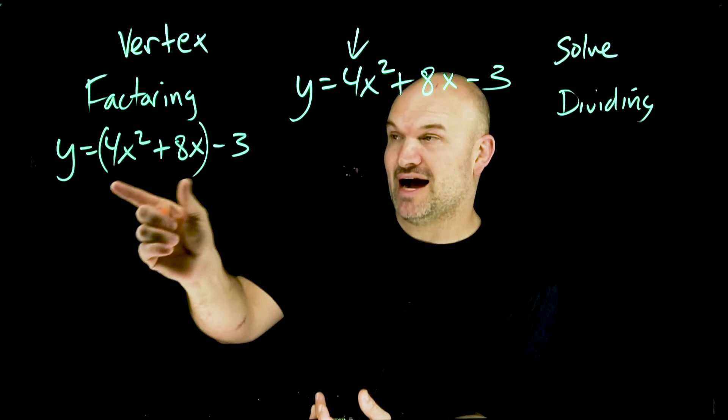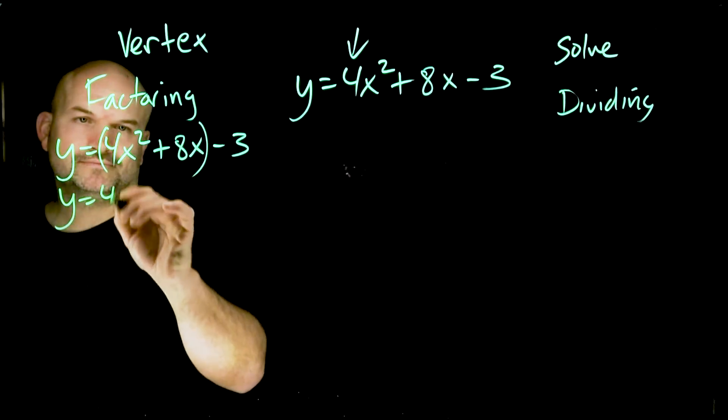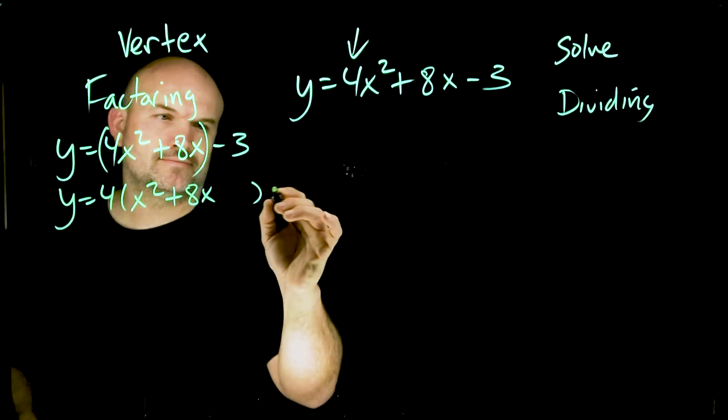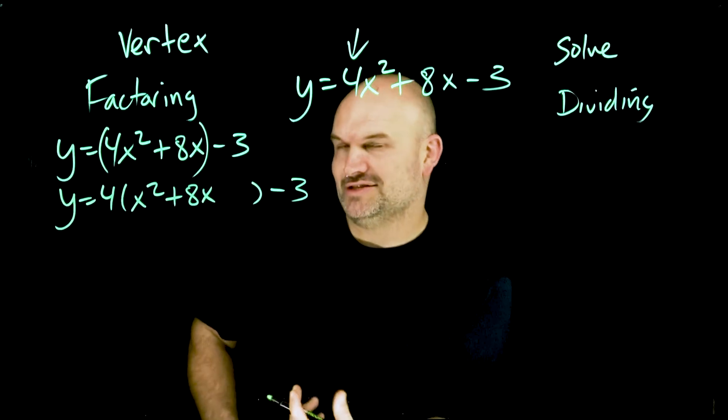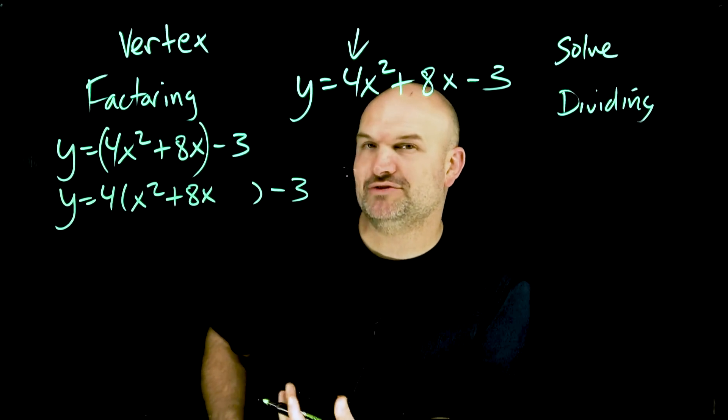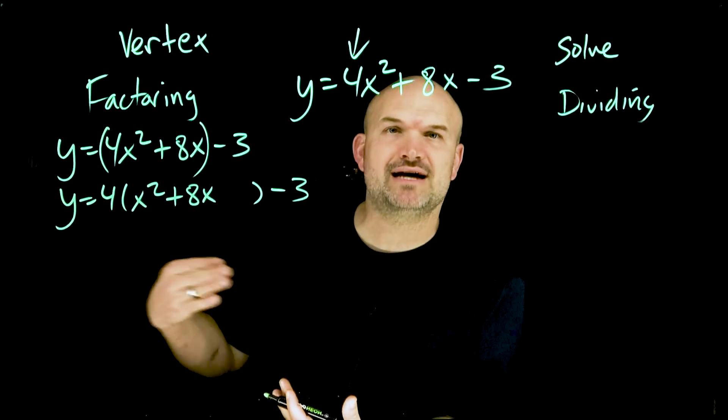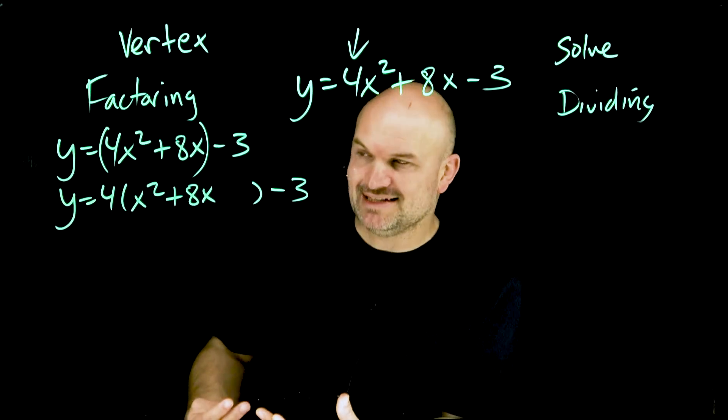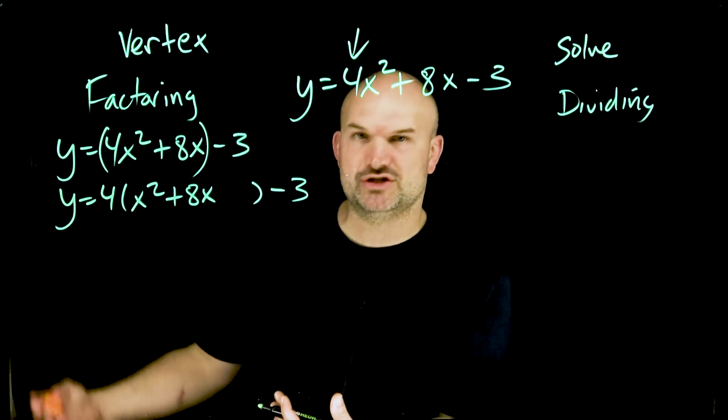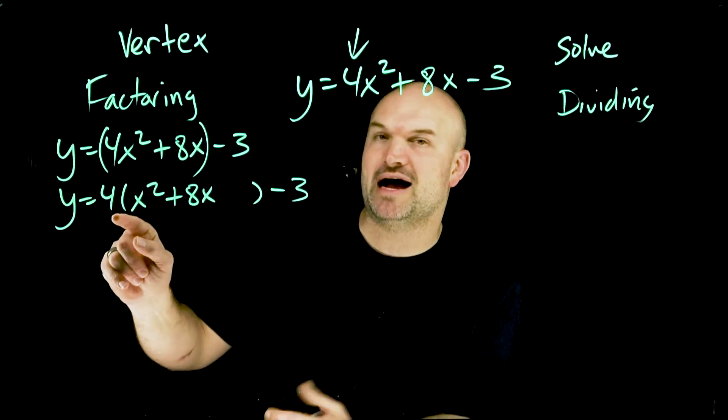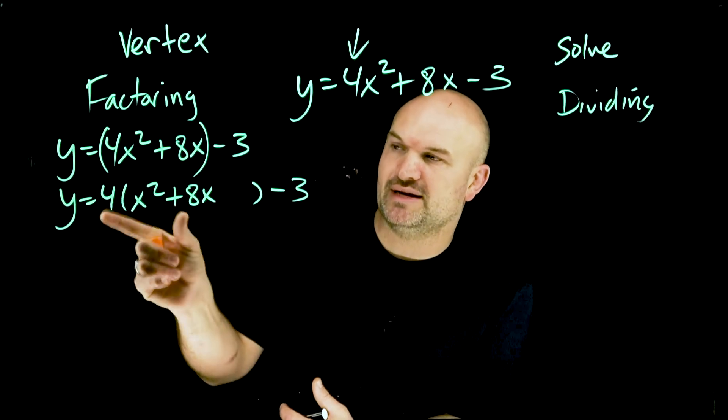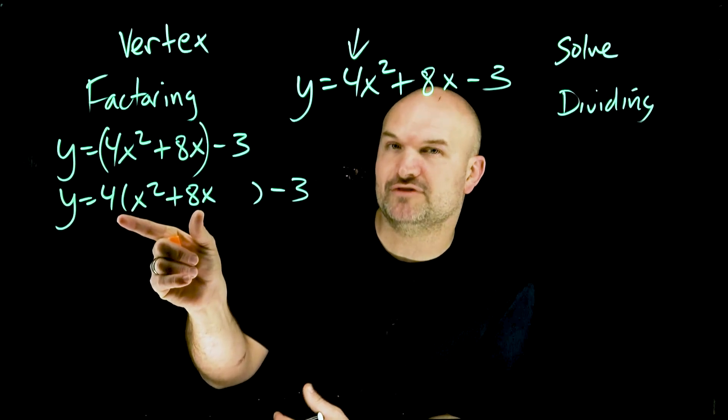Now I can factor out the four. A lot of students ask the question, why don't you factor out the x? Because a lot of times when we're factoring we factor out the greatest common factor. Again, the idea, the purpose behind this, is we're not trying to factor out the GCF, we're just trying to factor out the four. We only factored it out of the first two terms.